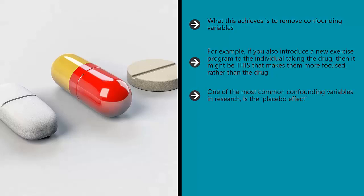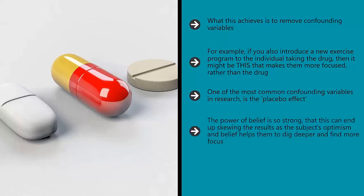One of the most common confounding variables in research is the placebo effect. This effect describes the fact that when you tell someone they're receiving a drug, they will then feel better even if the drug is just a sugar pill. The power of belief is so strong that this can end up skewing the results, as the subject's optimism and belief helps them to dig deeper and find more focus. That's why the experimental group will often receive a sugar pill — this way both groups think they are getting something and you can thereby rule out the role of placebo in the study.